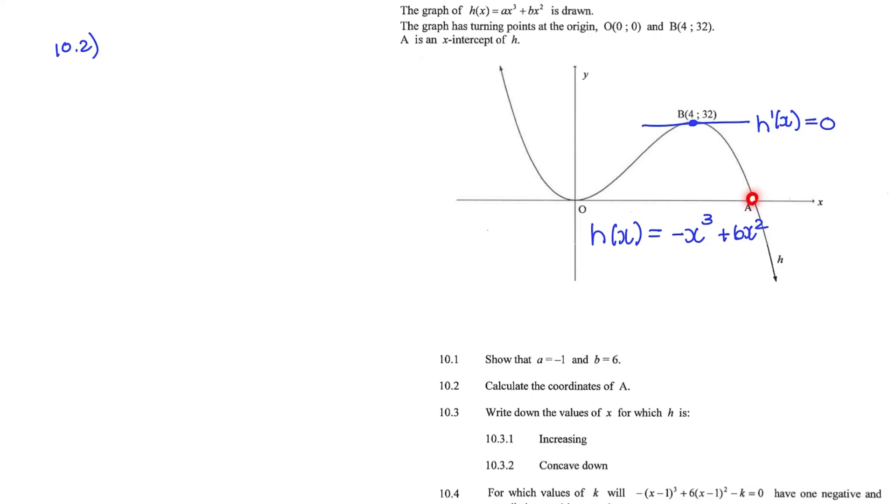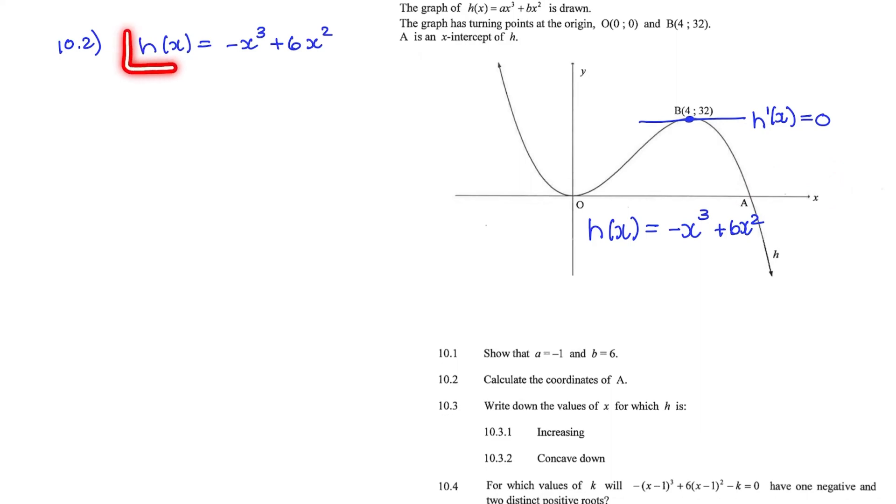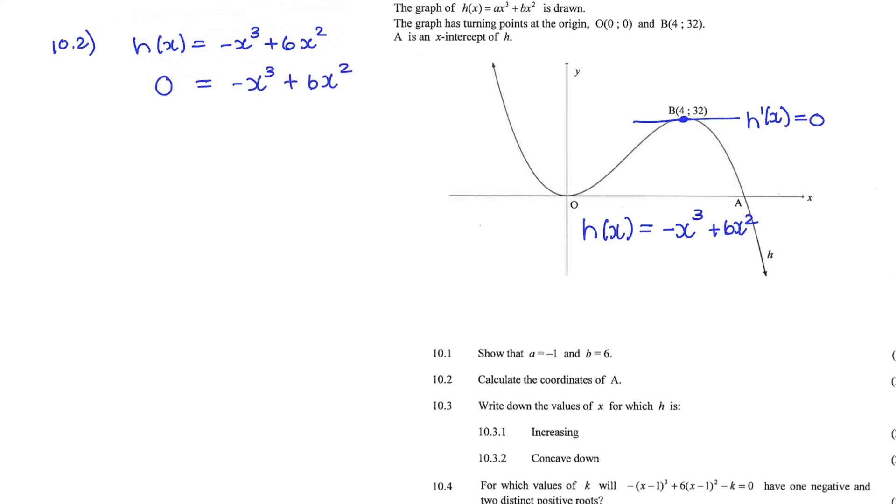And what we know at the x-intercept is that the y-value is equal to 0. So we have H(x) equals negative x cubed plus 6x squared. And at the x-intercept, H(x) equals 0. And then I'll rewrite that in standard form. So it's x cubed minus 6x squared equals 0.